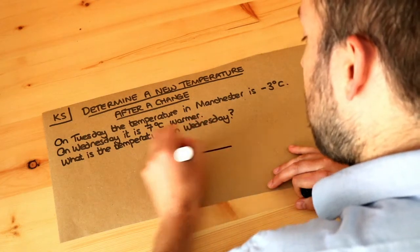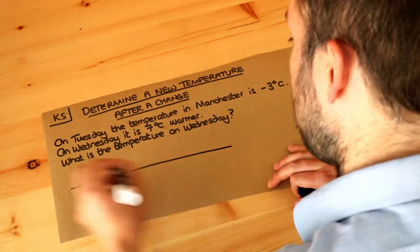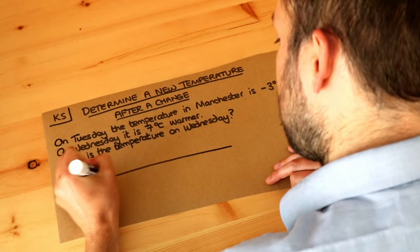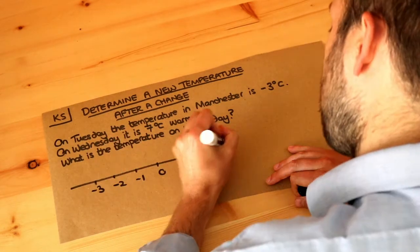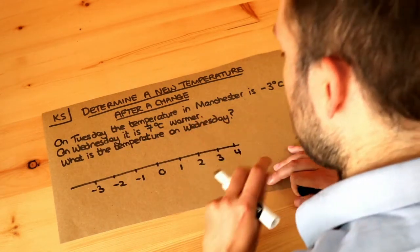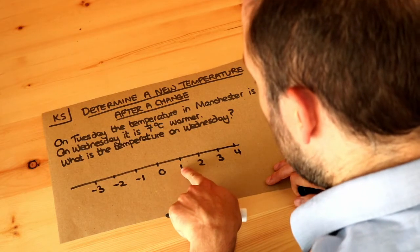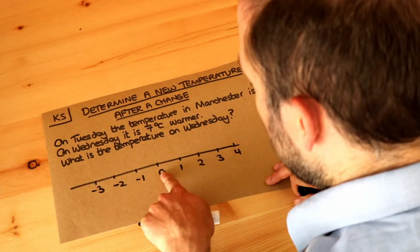Now if it helps we could draw this on a number line. So if I write these different temperatures, imagine there's degrees Celsius on the end of each of them, remembering that with a number line with negative numbers we have zero and then the numbers go up from there and the numbers go down from there.